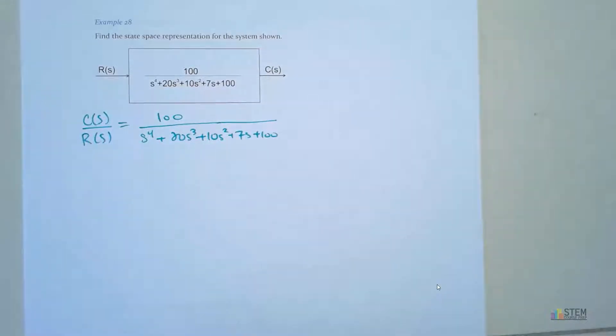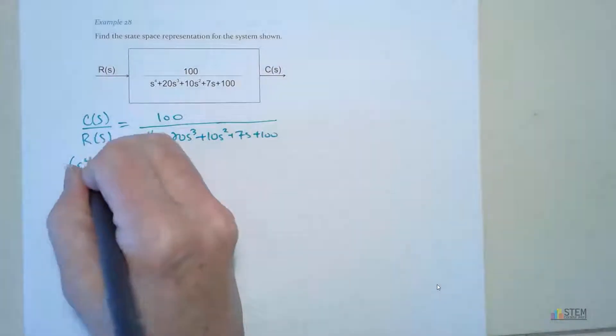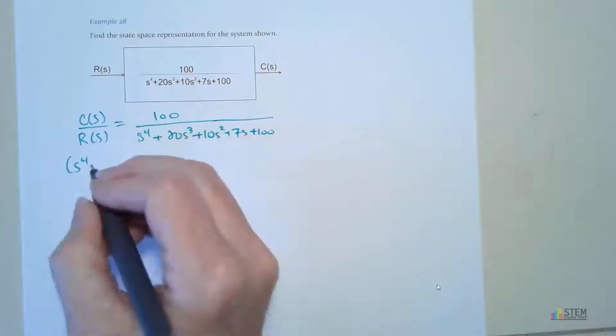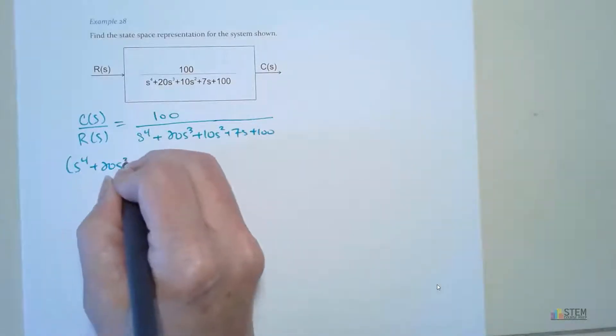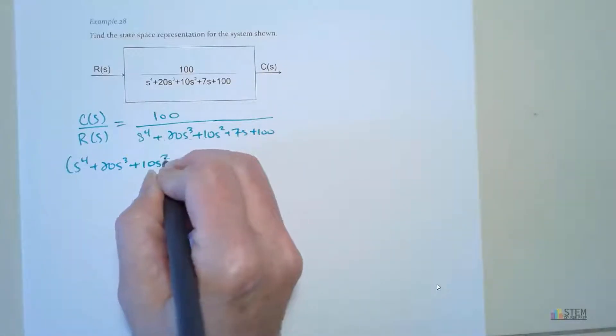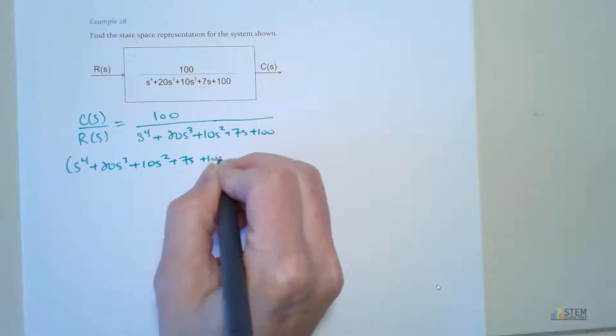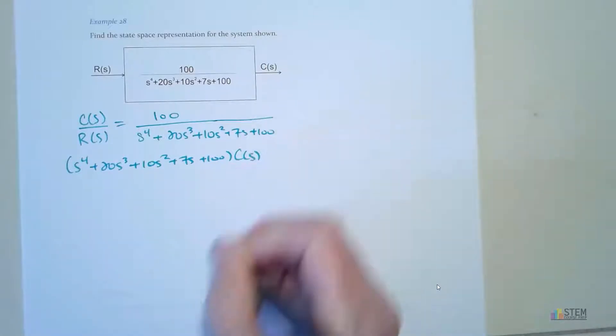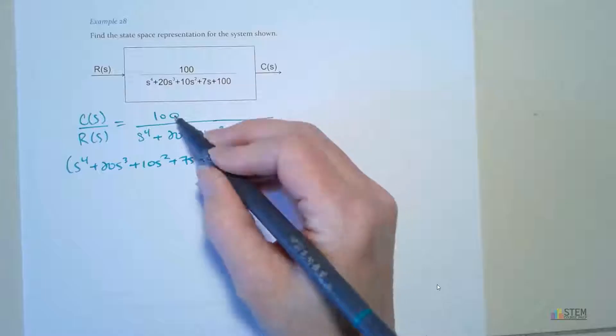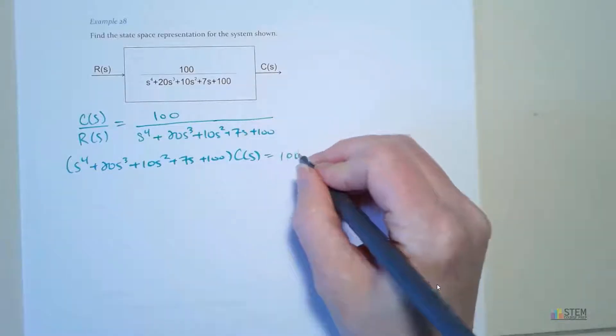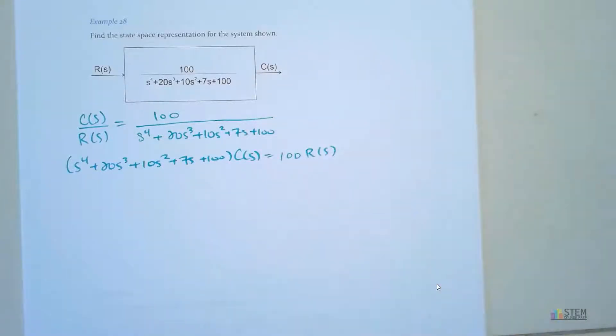Now we've got that. Now we're going to use this to get our differential equation. What we're going to do basically is cross multiply. So we have this denominator, we're going to multiply it by c of s. And then right side, we're going to have 100 times r of s.